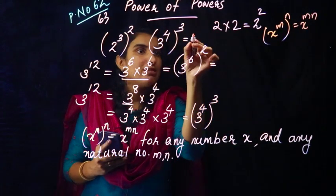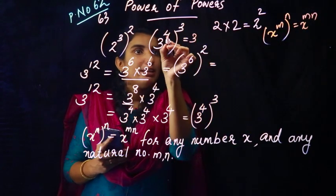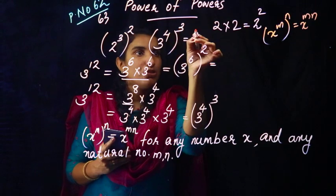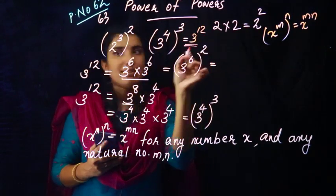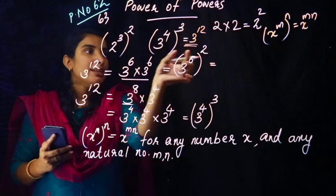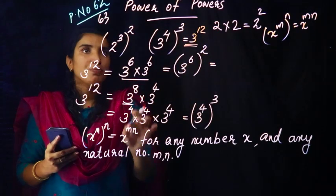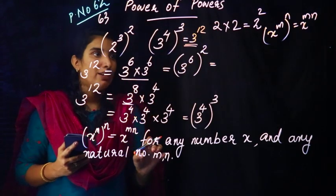Here, 3 raised to 4 and 3 gives 4 times 3 equals 12. Then we have the answer 3 raised to 12.